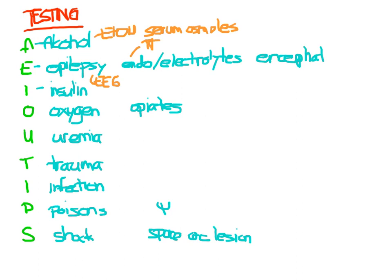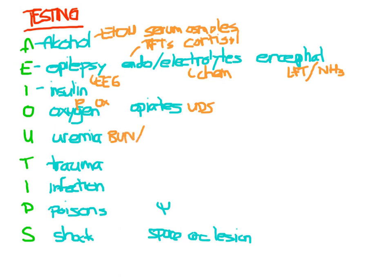For endocrine, send thyroid function tests — maybe this is thyroid storm — or a cortisol level if you suspect adrenal insufficiency. Pretty much everyone is going to get a chemistry panel to check their electrolytes. For encephalopathy, check liver function tests and an ammonia level. For oxygen, put them on O2 and get pulse oximetry. For opiates, check a urine drug screen. For uremia, get a BUN and creatinine with the chemistry.